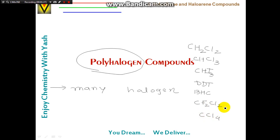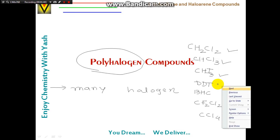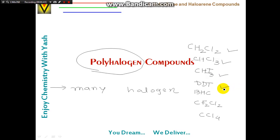CF₂Cl₂ is Freon, with two fluorine and two chlorine atoms. DDT has 5 chlorine atoms, BHC has 6 chlorine atoms, and CCl₄ has 4 chlorine atoms. All these are by definition polyhalogen compounds. We will study their preparations, physical and chemical properties, uses, and any environmental or physiological effects.